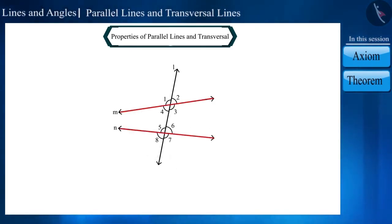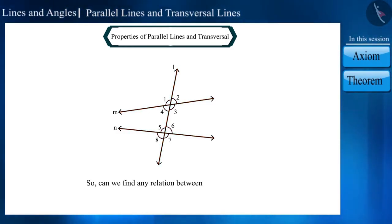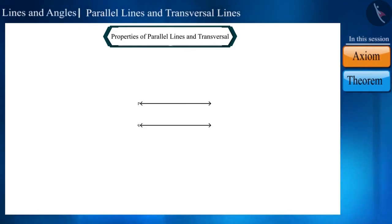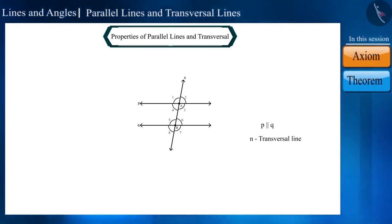Friends, if these two lines are parallel — that is, if a transversal intersects two parallel lines — then can we tell if there is any relation between the angles? Let's draw two lines, P and Q, which are parallel to each other, and a transversal N which intersects them at points A and B respectively.